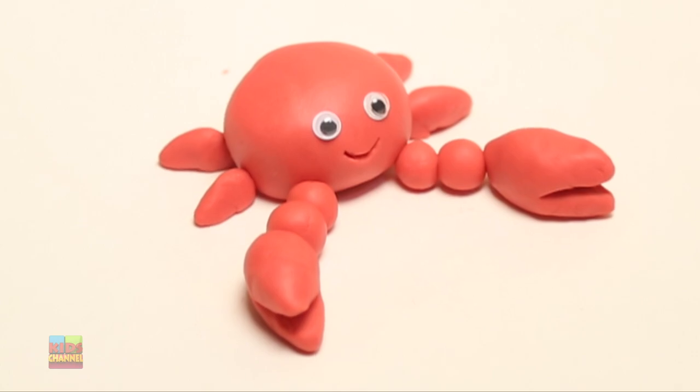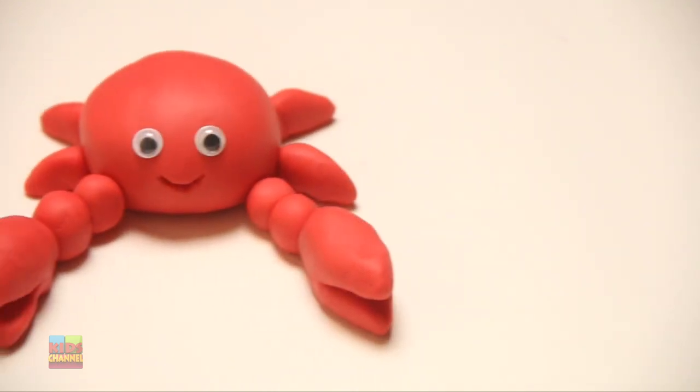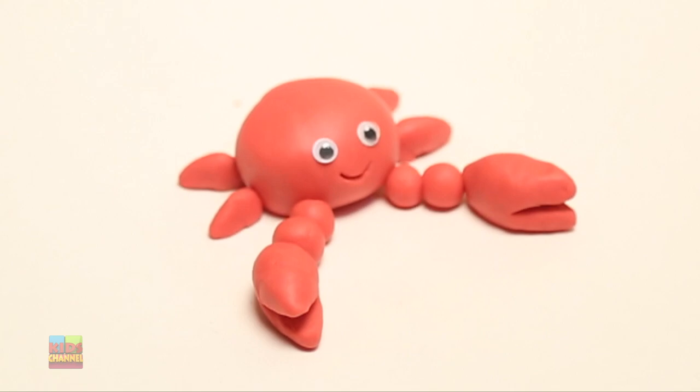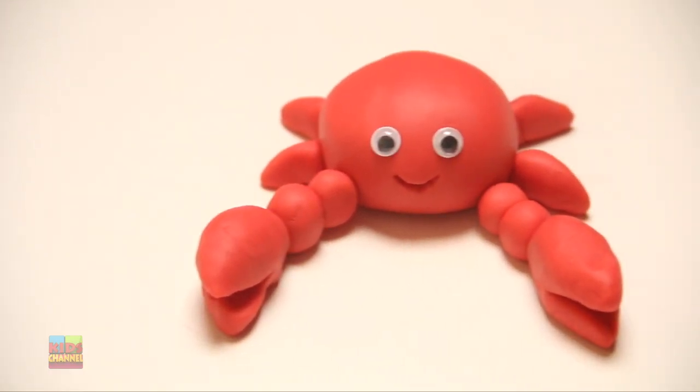That was really simple. Just one Play-Doh color, a Play-Doh knife, some googly eyes, and you have made a fantastically adorable-looking Play-Doh sea crab. Well done. Fantastic. Well, thanks for watching. Stay tuned for more Play-Doh videos.